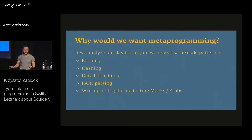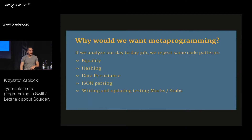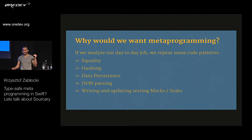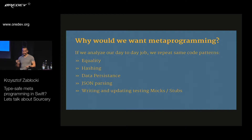All of those things separately are very simple tasks — straightforward, not complicated. Everyone who can write Swift can do all of those tasks. The thing is, there are a lot of them, and this is just a couple. There are many simple tasks we do every day that are 99% of the time the same code, regardless of project or model type. For example, equality: what is equality in most projects? It's comparing every single variable and seeing if it's different. If it's different, it's not equal — that's 99% of cases.